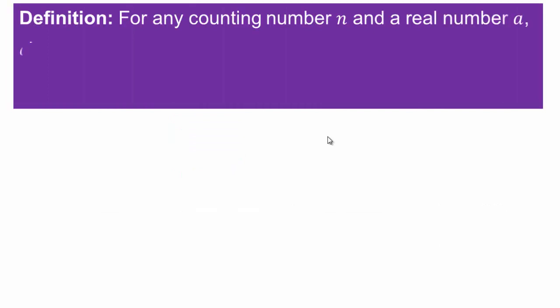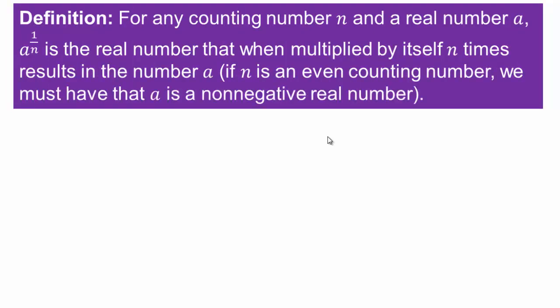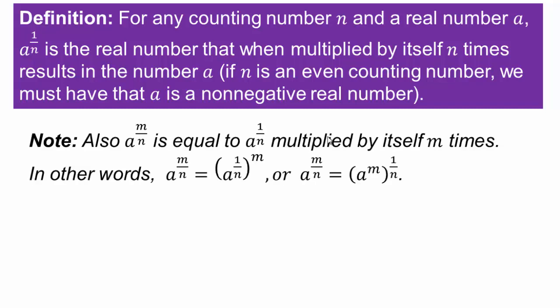So we are defining that for any counting number N and a non-negative real number A, A to the power 1 over N is a real number that, when multiplied by itself N times, results in A. For example, 32 to the power one fifth is that number which, when multiplied by itself five times, gives you 32. We already saw that number was 2, because 2 times 2 times 2 five times gives you 32.